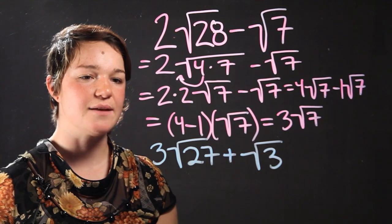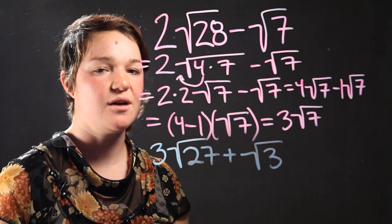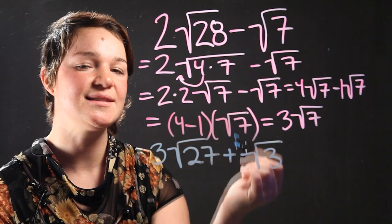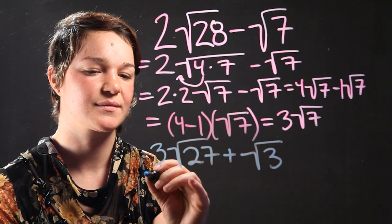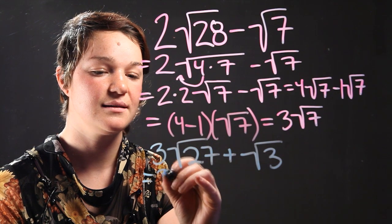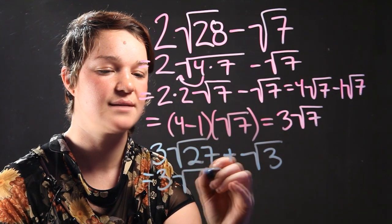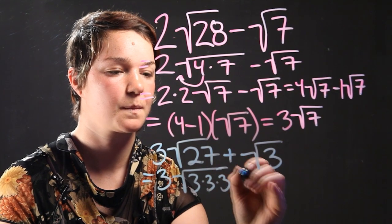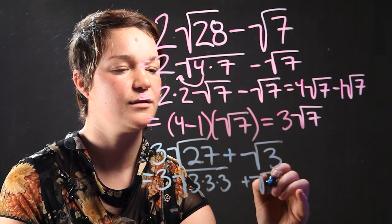So once again, this expression isn't all the way simplified, so let's do that. We're going to take 27 and simplify further. To simplify it, we realize that this can become 3 times the radical of 3 times 3 plus radical 3.